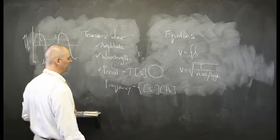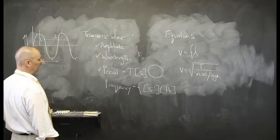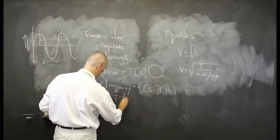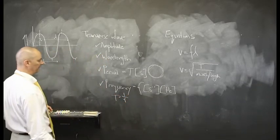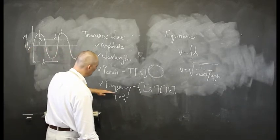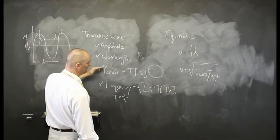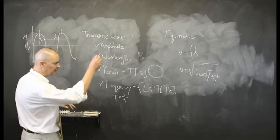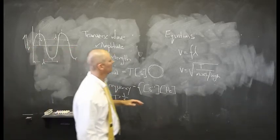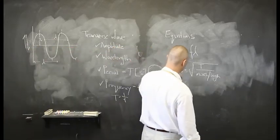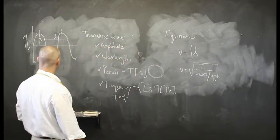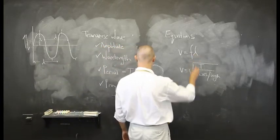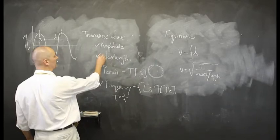We know that period equals one over frequency, or frequency equals one over period — that's how many waves pass per second and how long it takes one wave to pass a specific point. So we understand what transverse wave motion is: that movement up and down. Two equations we're going to deal with here in the first section. The velocity at which this wave travels equals frequency times the wavelength — this frequency here times this wavelength here.